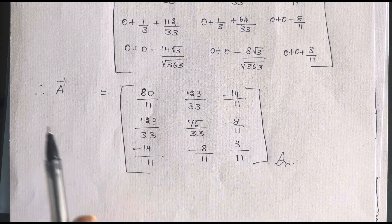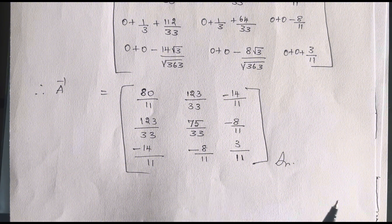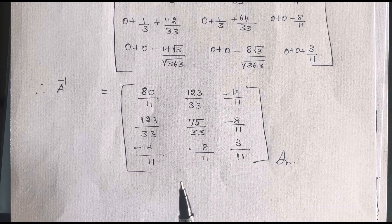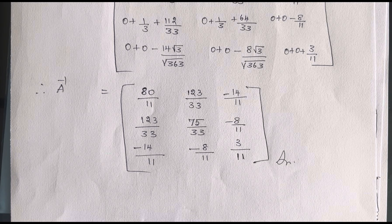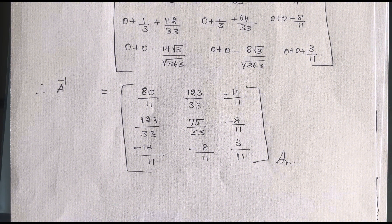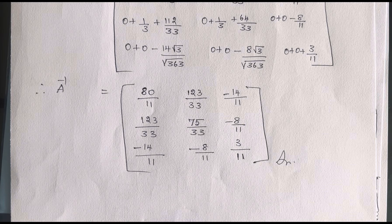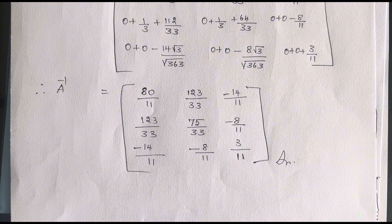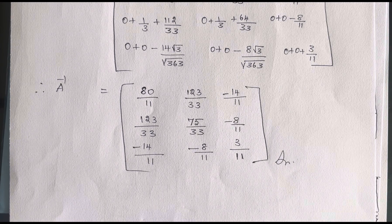This is the matrix for A inverse, and hence the solution. To summarize: apply the Cholesky method to get L, then find L inverse, then substitute into A⁻¹ = L^(-T) · L⁻¹. Once you know L inverse, the problem becomes simpler — just be careful with plus and minus signs and your calculations. Hope this video helps you learn and understand better. Good luck, thank you, bye.